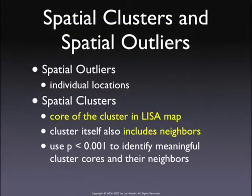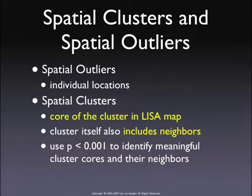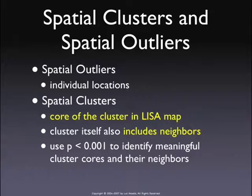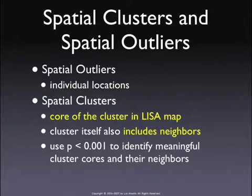This gets back to the actual notion of clusters and outliers. The map shows those locations that have a significant local Moran statistic — we compute the local Moran for each location, and if it's significant, we map it. If it's an outlier, that's a location that is different from its neighbors. So an outlier is a single location, by definition, because it's different from its neighbors.